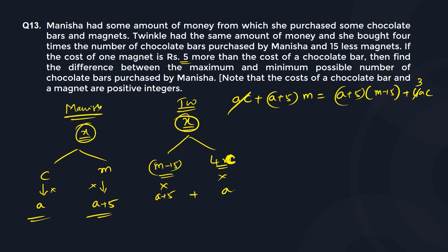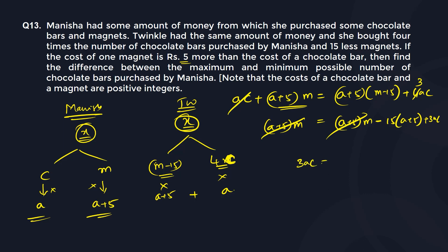So 1ac will become 3ac on the other side. We can write this as (a plus 5) into (m minus 15) plus 3ac. And this is (a plus 5) times m, and you can see this entire (a plus 5)m term gets cancelled. So what do I get? 3ac is equal to 15 times (a plus 5), so ac is equal to 5a plus 25.